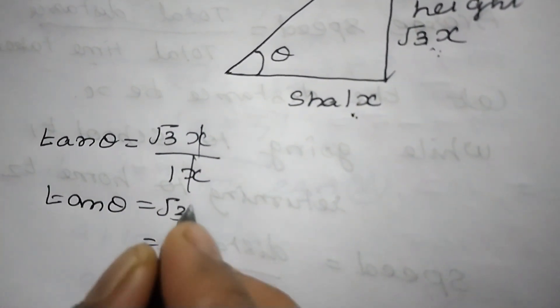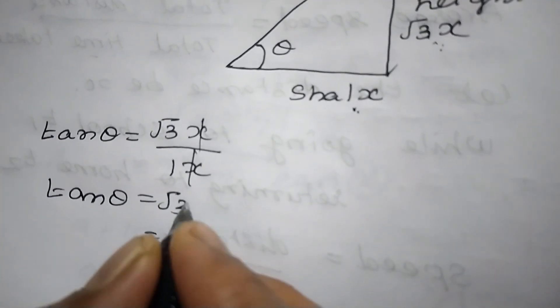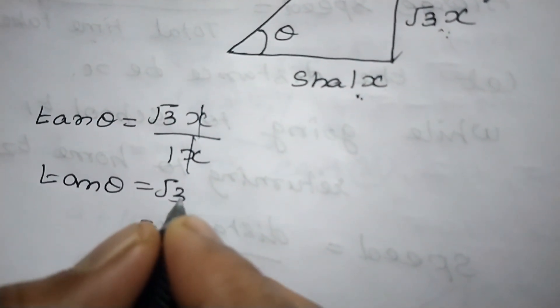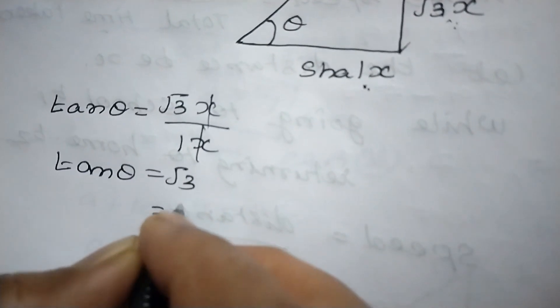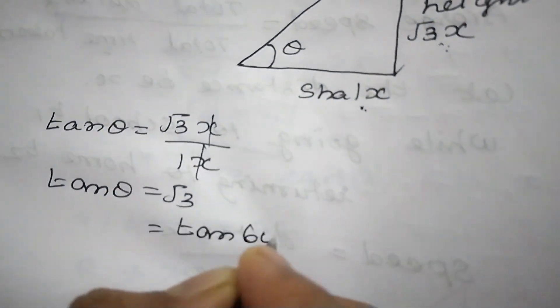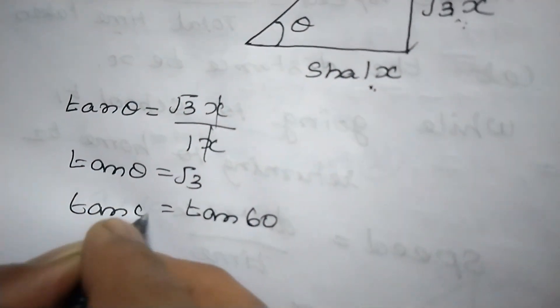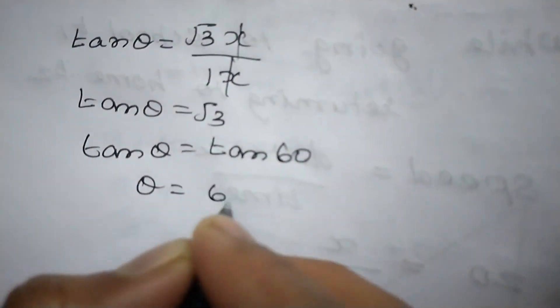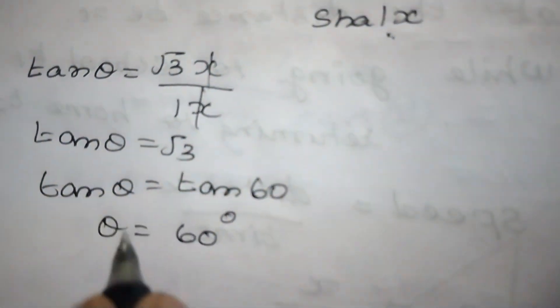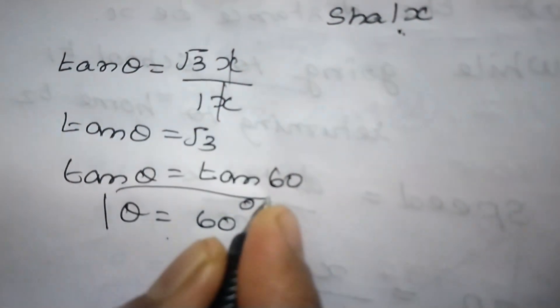When is √3 tan √3? Which value is this √3 tan? So that is equal to tan 60 degree. So tan theta equal to tan 60 degree. So theta equal to 60 degree. So angle of elevation is 60 degree.